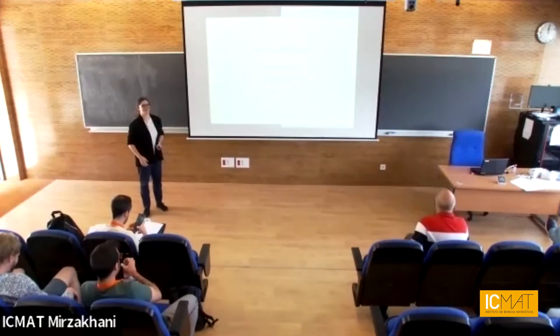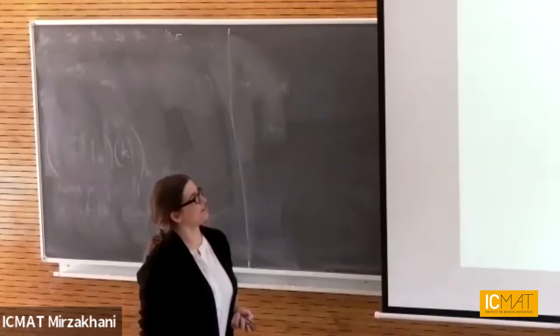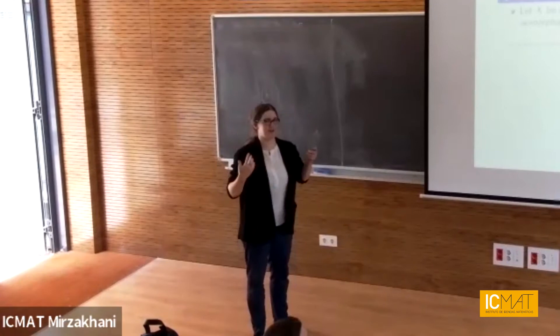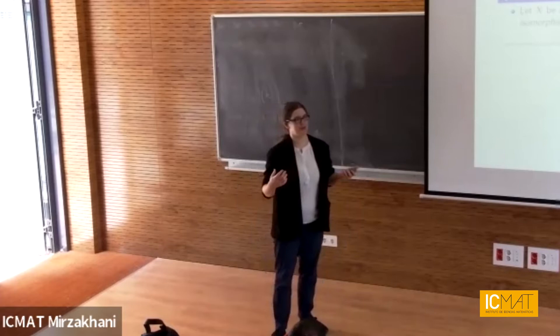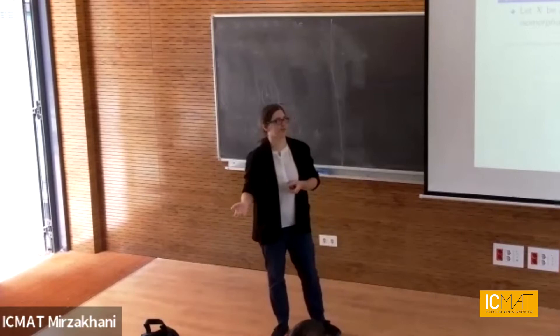Thanks for inviting me to give a talk. I've really enjoyed the conference so far. So let's begin with some historical motivations. Suppose you have a Banach space and you have its associated group of isometries on one hand and its group of isomorphisms on another. We want to know if there's any sort of information that can be gained about its isomorphic structure given its isometric structure.